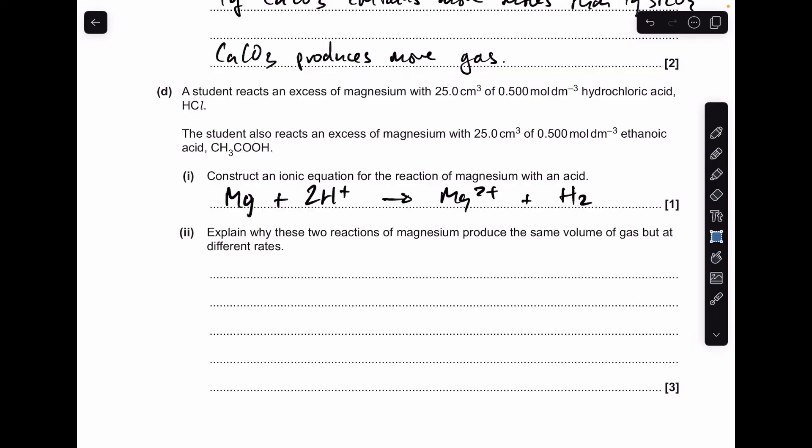Moving on to the final part, I'll break it down into the three parts for those three marks that are available. The first thing we need to talk about is the nature of the acid. HCl is strong, so it's fully dissociated. Ethanoic is weak, so it's partially dissociated.